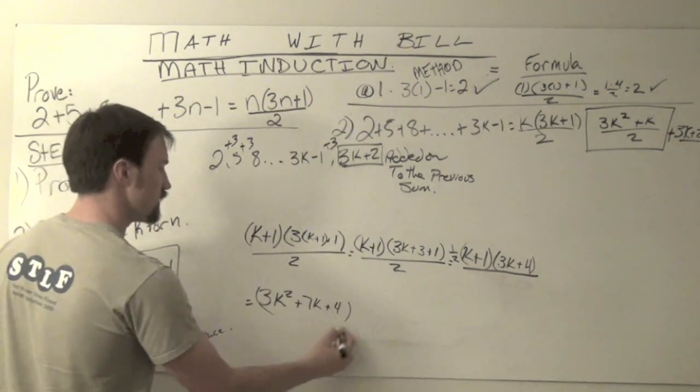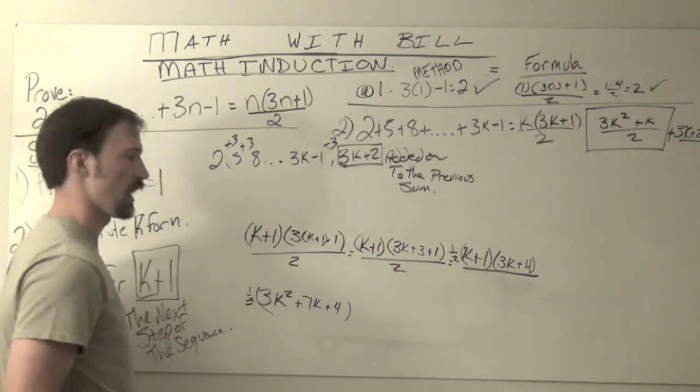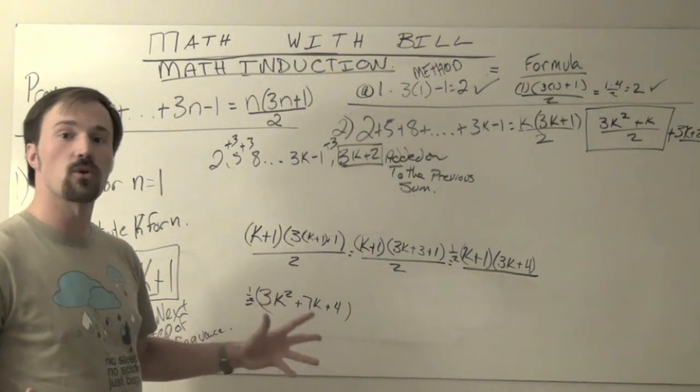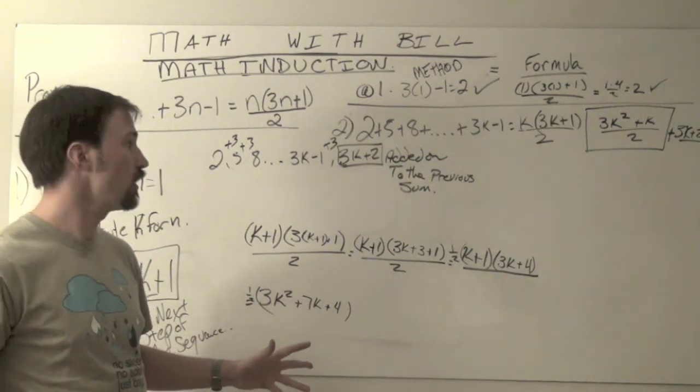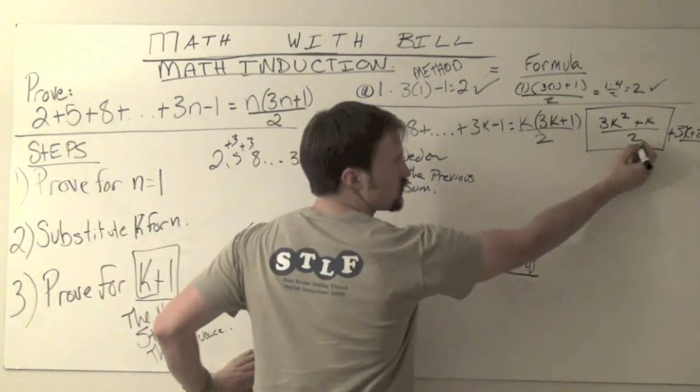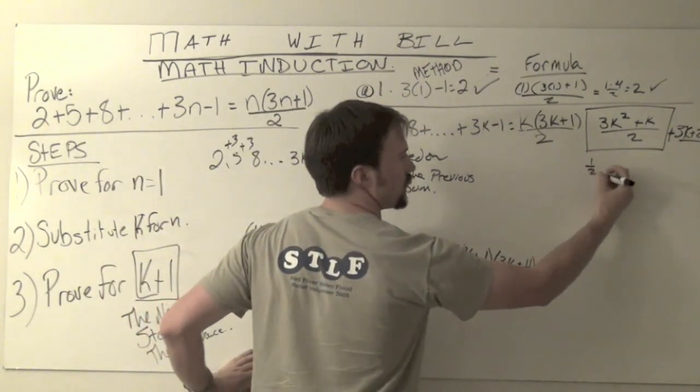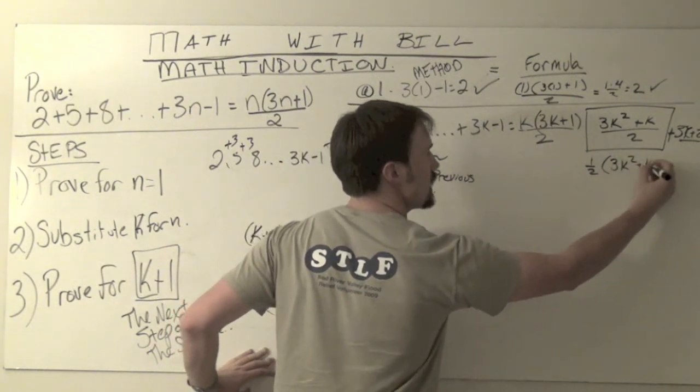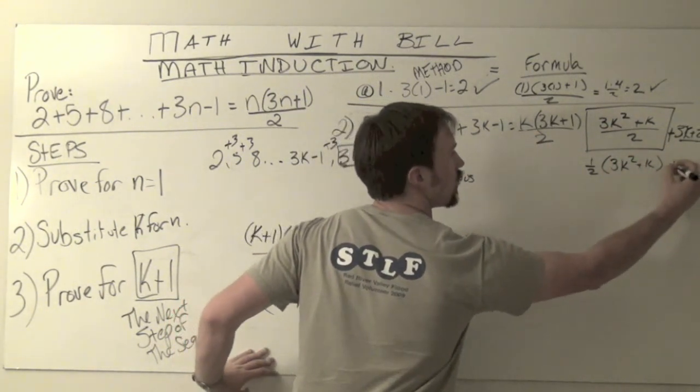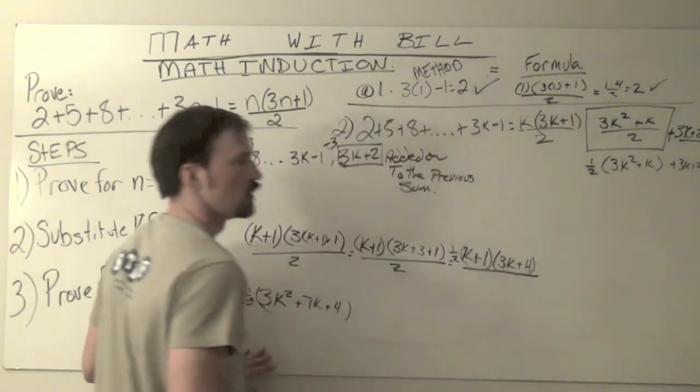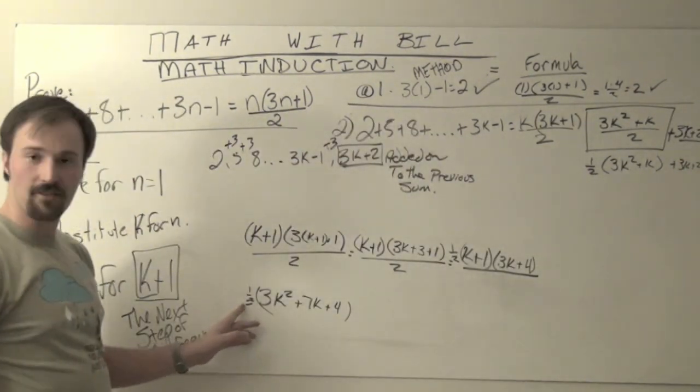Again, all of this is being multiplied by 1 half. This is great. This is where we're moving from. Because what we need now is if we bring this 1 half multiplier out front, we have a 1 half times a 3k squared plus k, and then plus 3k plus 2.